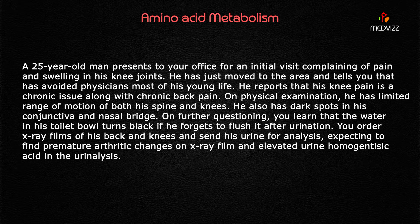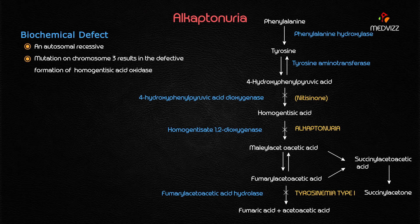You order x-ray films of his back and knees and send his urine for analysis, expecting to find premature arthritic changes on x-ray film and elevated urine homogentisic acid on urinalysis. Yes, this is a typical case of alkaptonuria.